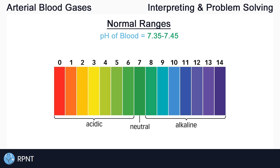A neutral pH, or a solution that is neither acidic nor basic, is 7 on the pH scale. Anything above 7 is considered basic, and anything below 7 is considered acidic. So our blood, because it sits around 7.35 to 7.45, is naturally a little bit basic. If the pH is higher than 7.45, or too basic, then we say that the body is entering alkalosis. And if our blood pH is less than 7.35, or too acidic, then we say that the body is entering acidosis. Both acidosis and alkalosis can be very problematic.